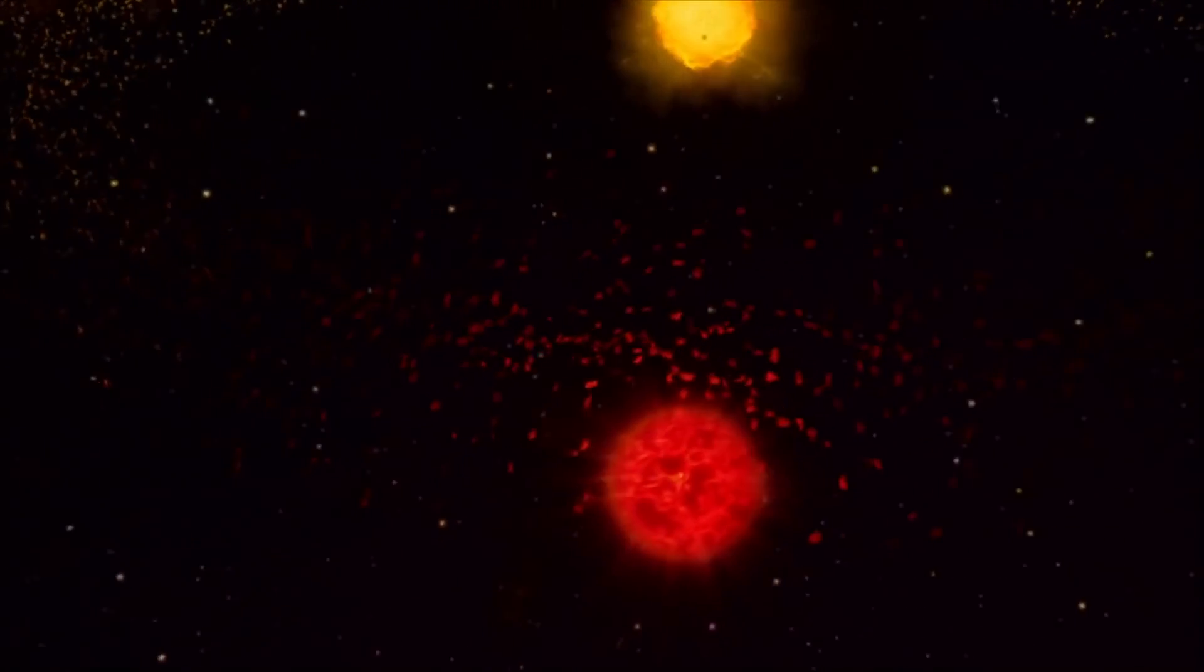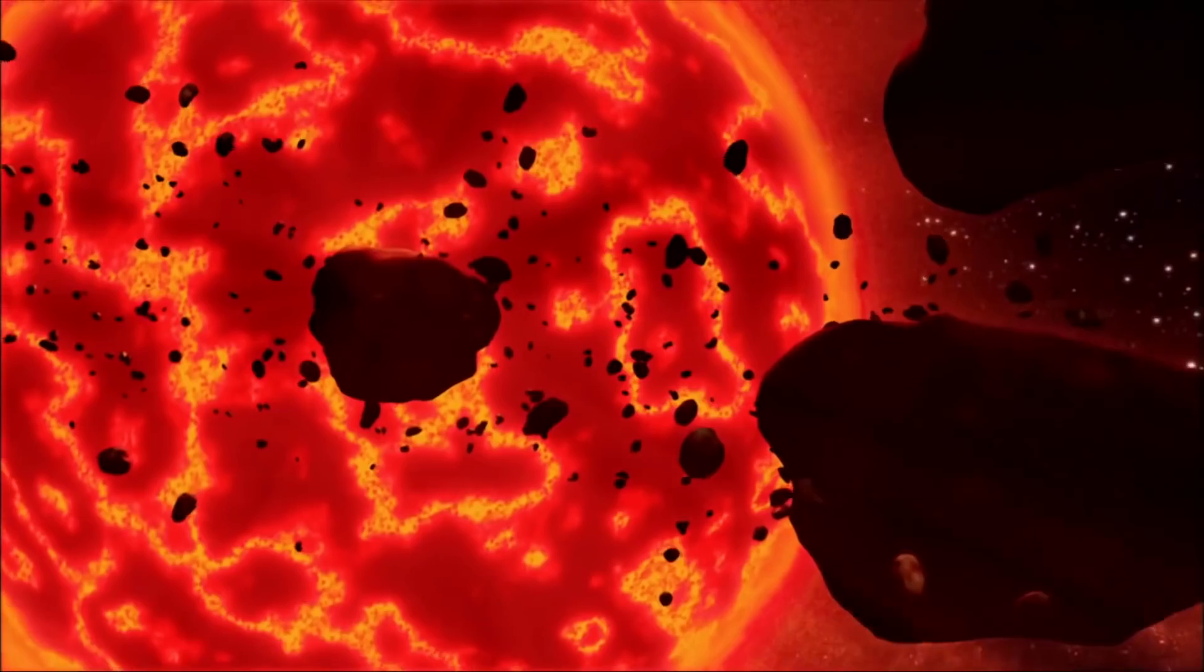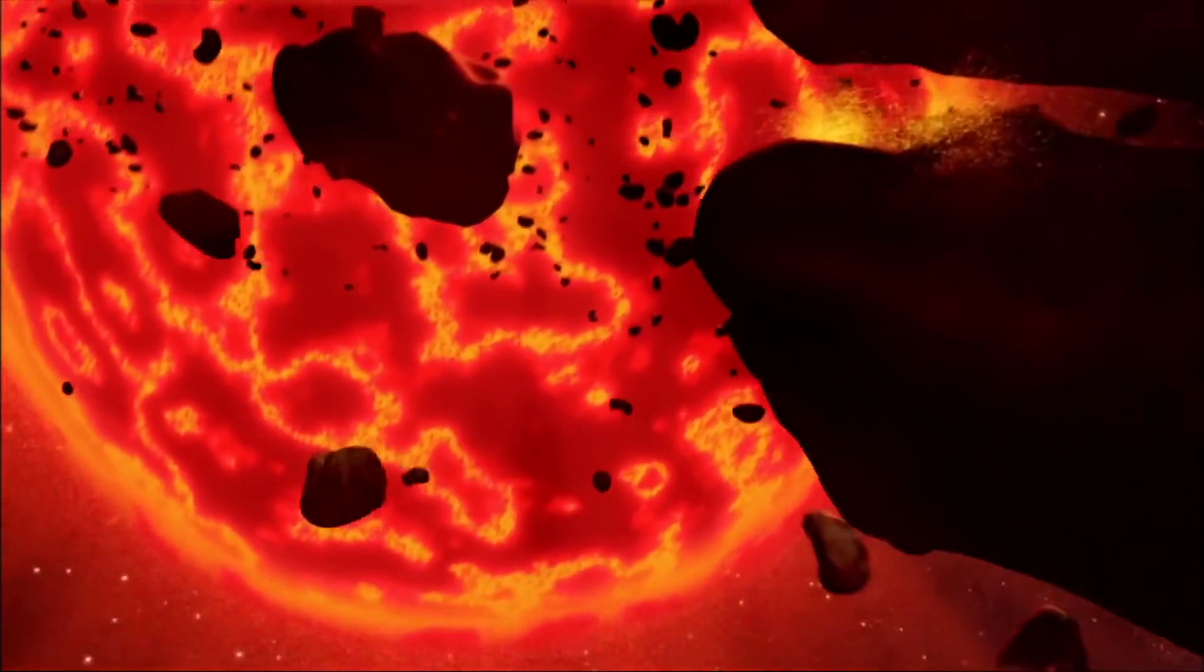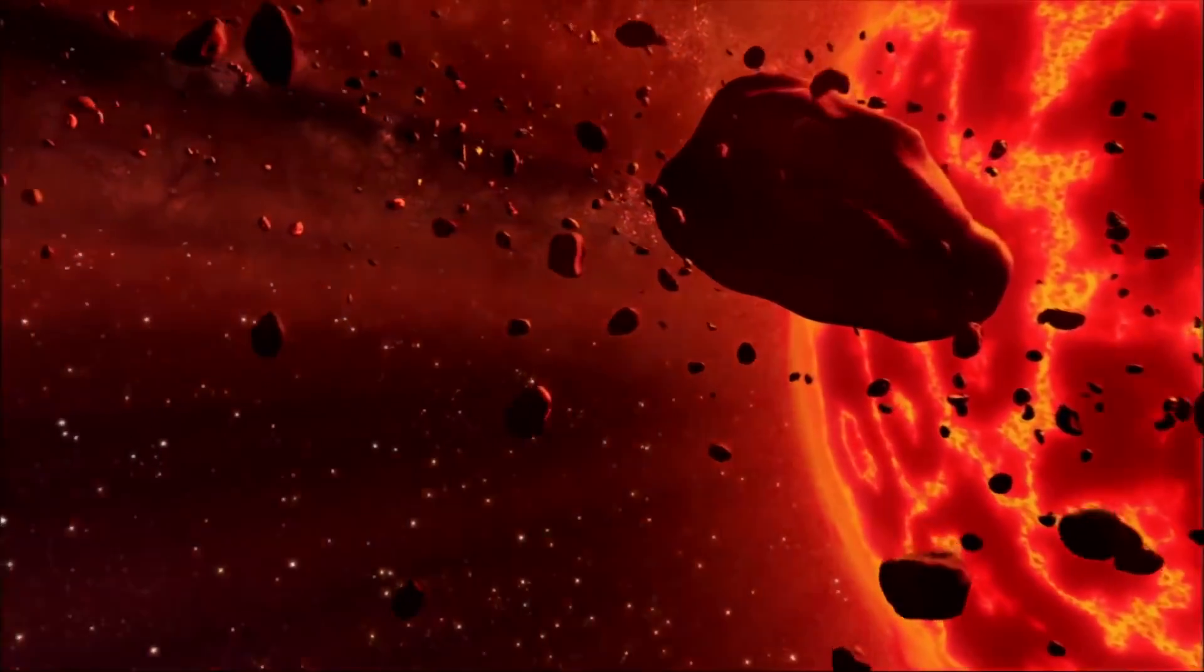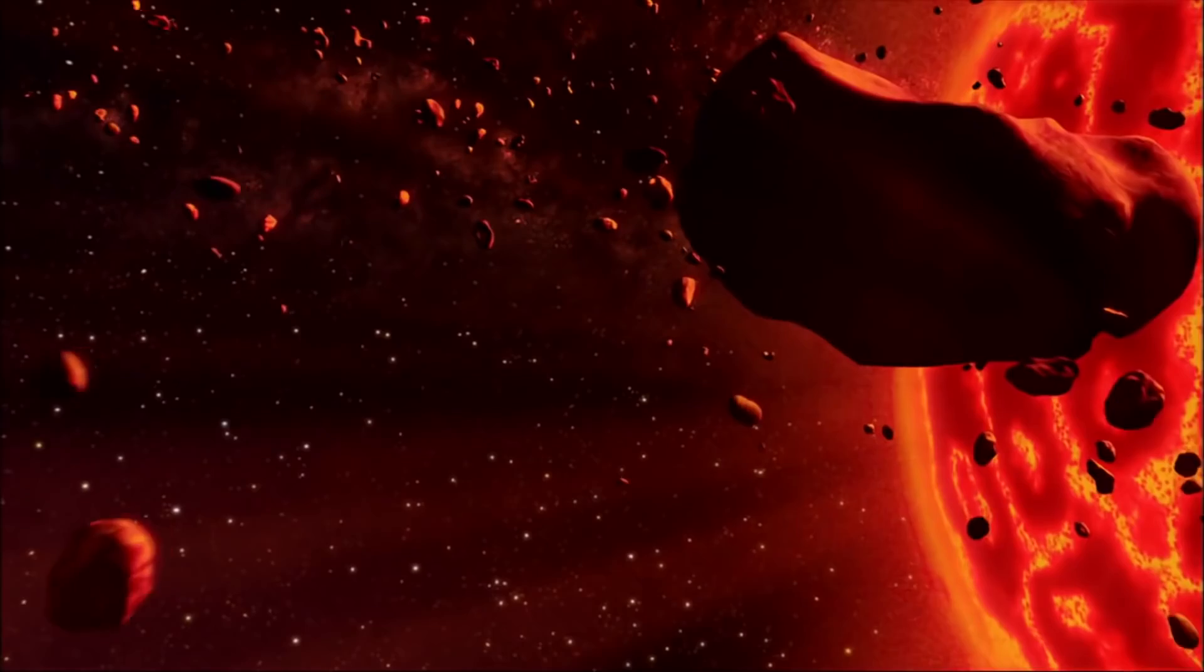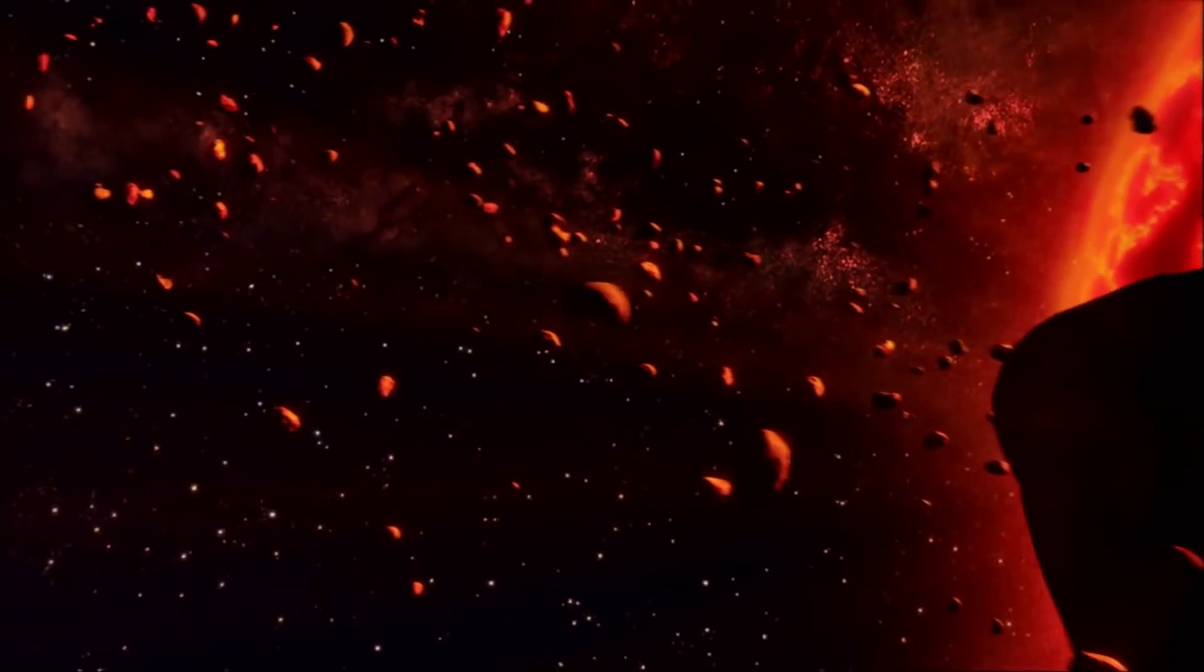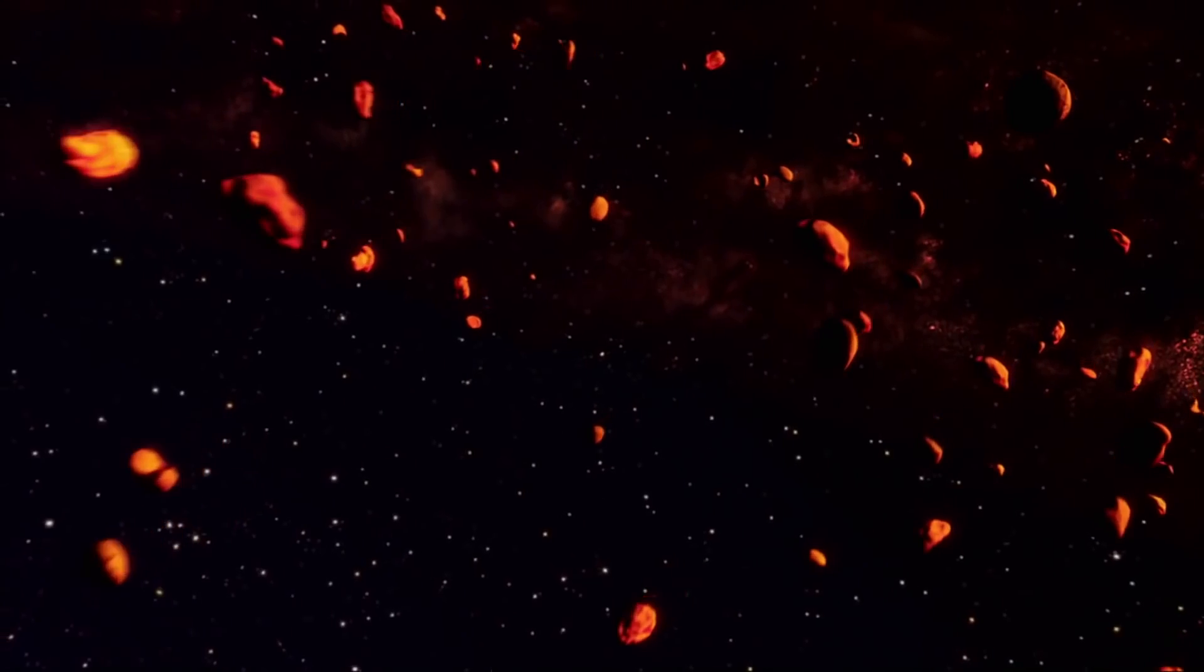According to his theory, Nemesis is an undiscovered companion star to our own sun. It travels between one and three light years from the center of the solar system on an elongated elliptical orbit. As Nemesis makes its closest approach to the sun every 26 million years, its orbit takes it right through the Oort cloud, a collection of an estimated trillion comets surrounding our solar system. That's when the order of the solar system turns especially chaotic.